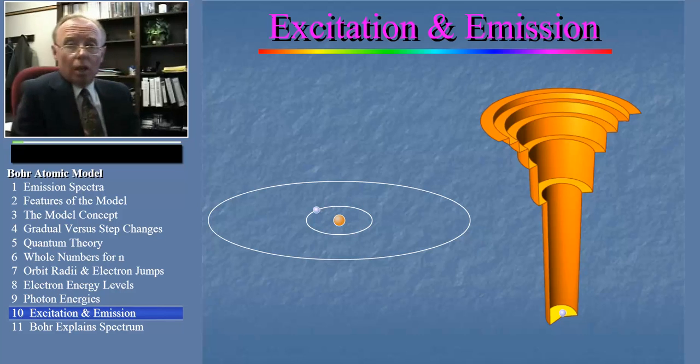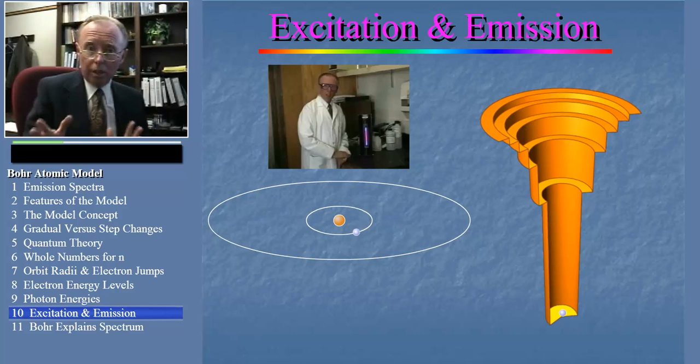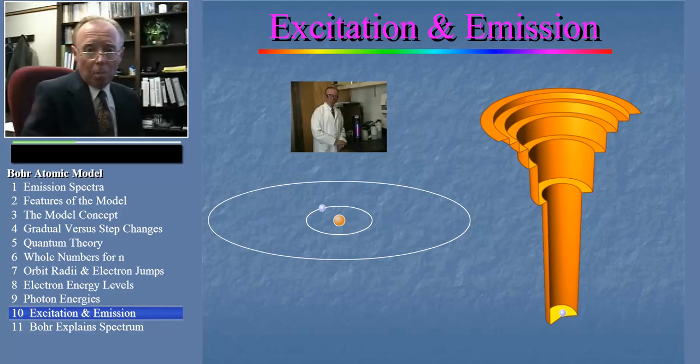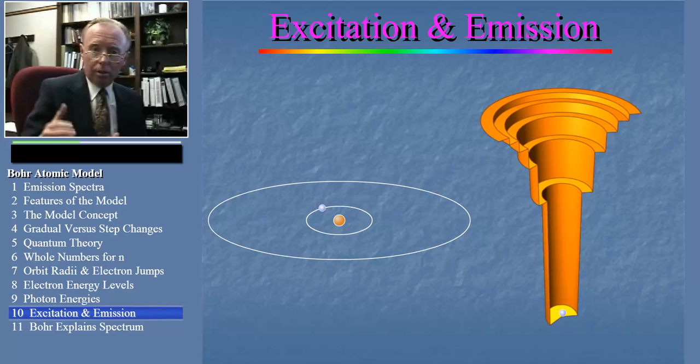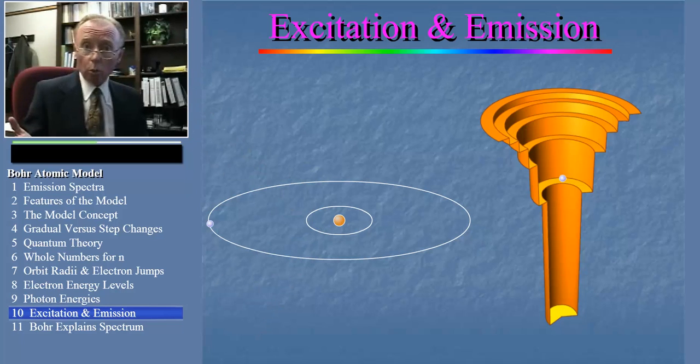Now something like what you just saw happens in the excitation tubes that I showed you in the lab at the beginning of today's lesson. Except that in that case the electron is caused to jump up from the ground state not by a photon, but by crashing into other hydrogen atoms moving at high speed or by being hit by high energy electrons.